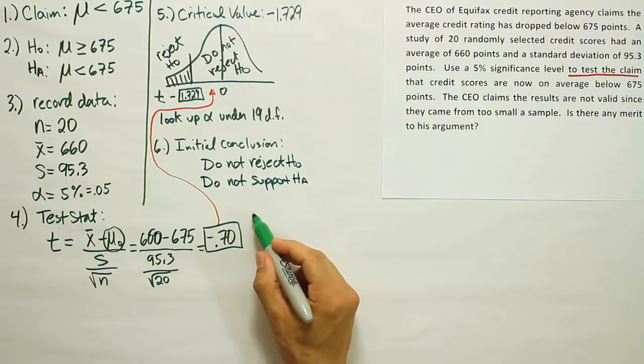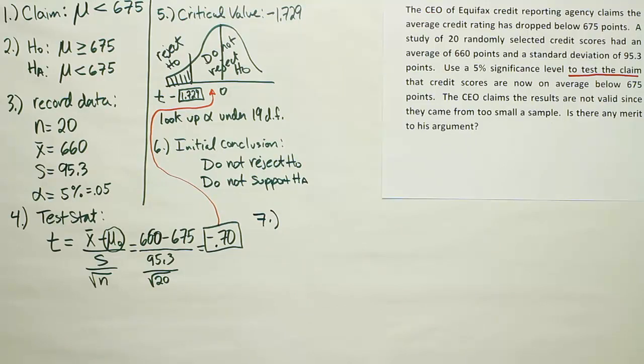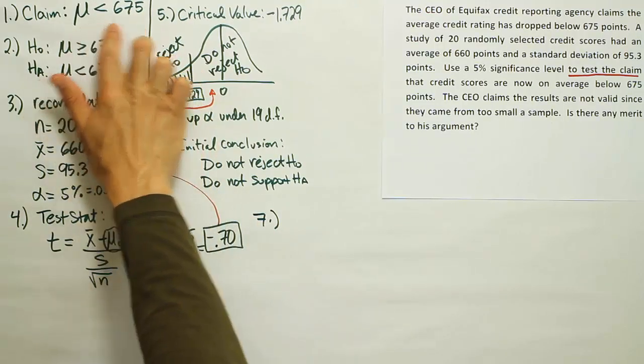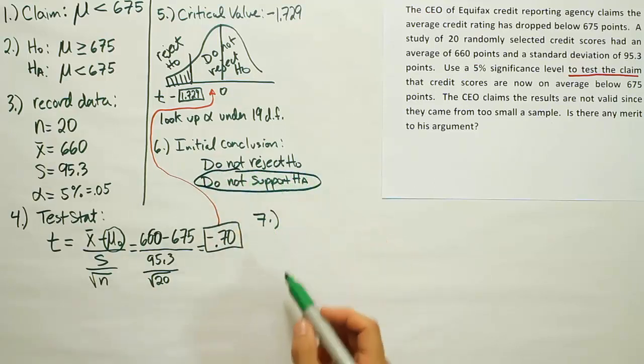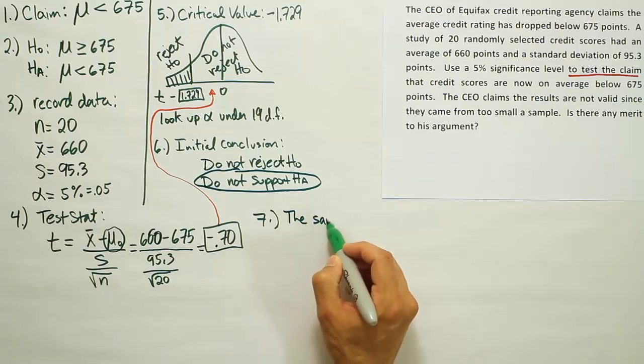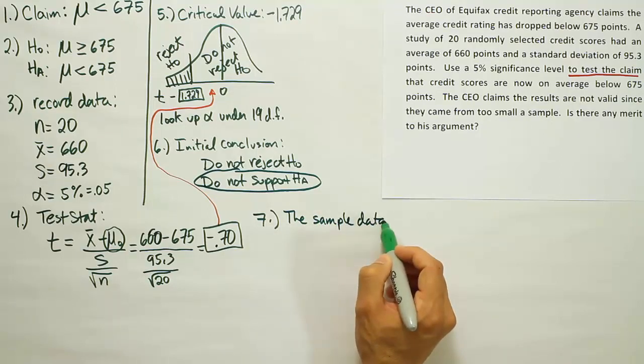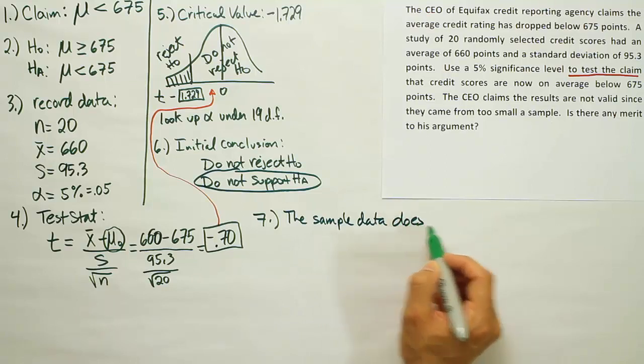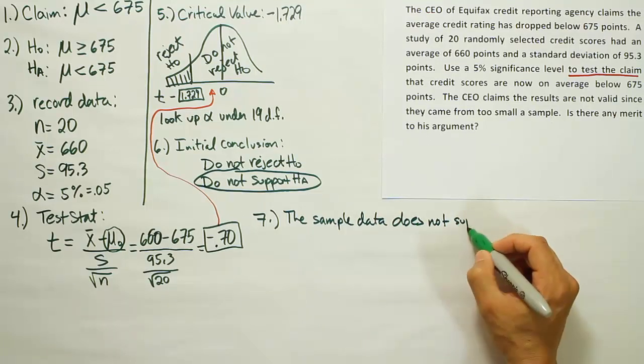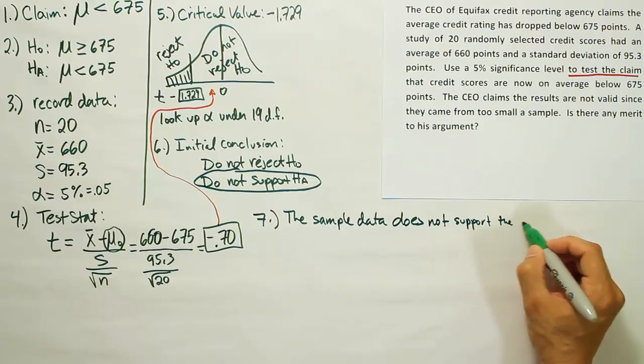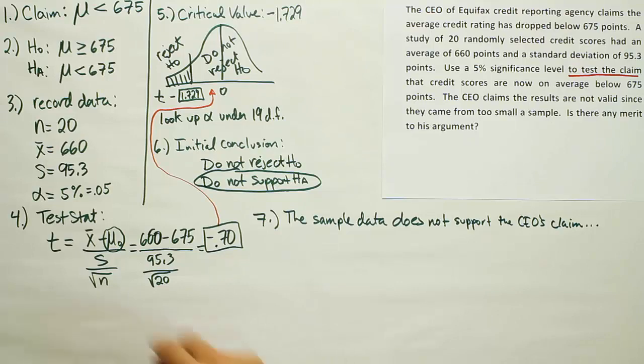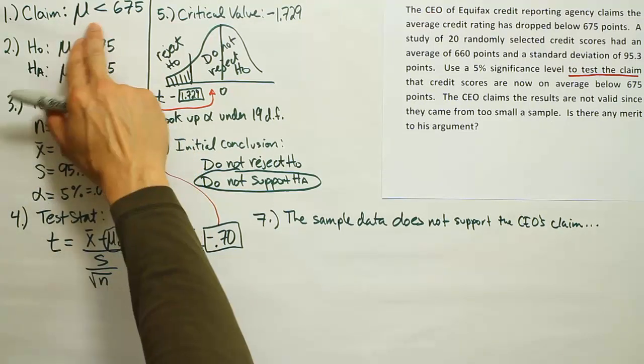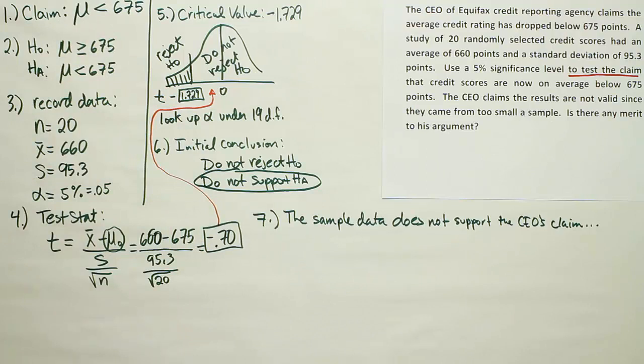The question is, which one are we going to use in our wording in this final step, step seven? Well, look here at our claim and realize that our claim is the same as HA, so we should use the phrase that we used here, because that's attached to HA, so we're going to say the sample data does not support the CEO's claim. So we're saying that we don't believe that the CEO is correct based on this data. We can't say that this statement is correct, that the mean is less than 675.